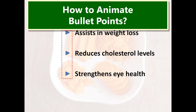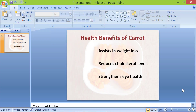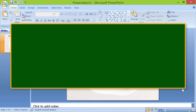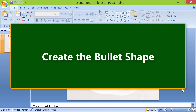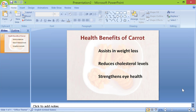Now let's look at how to animate bullet points. Let's create the motion path animation from scratch. First, create the bullet shape by clicking the triangle shape, then draw a triangle.